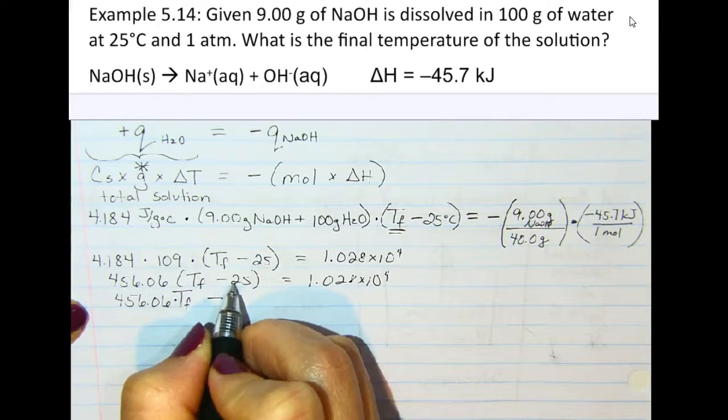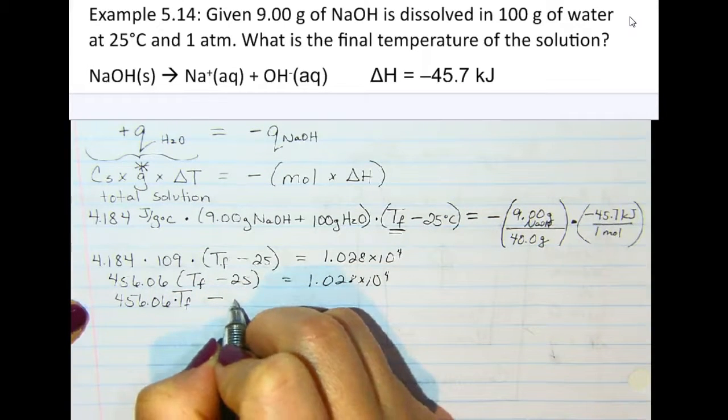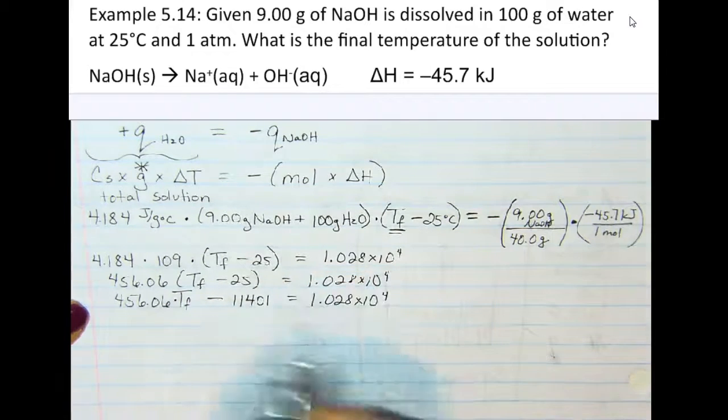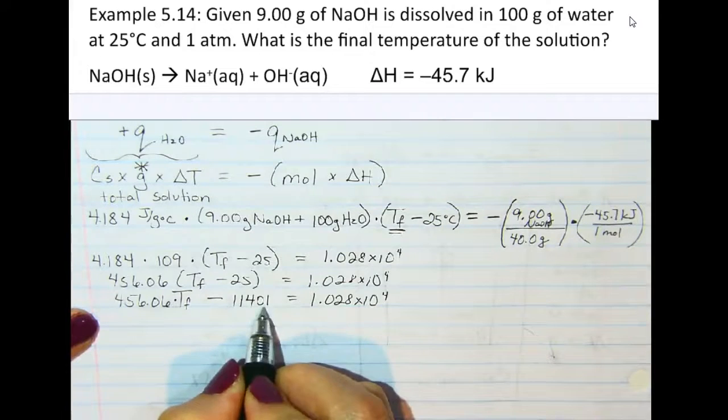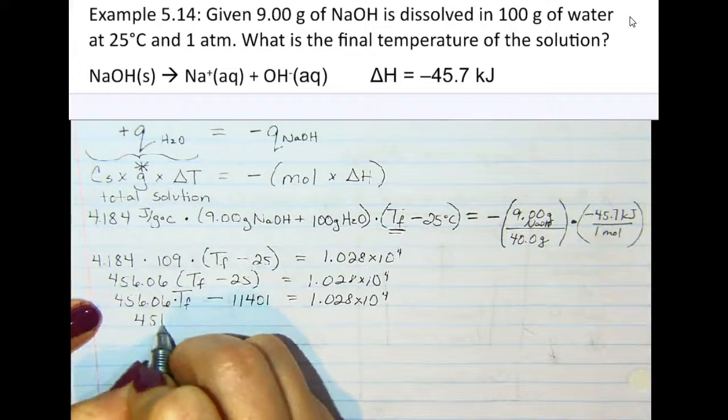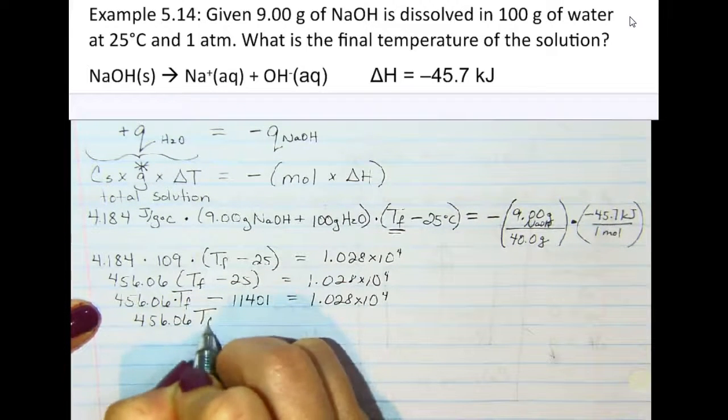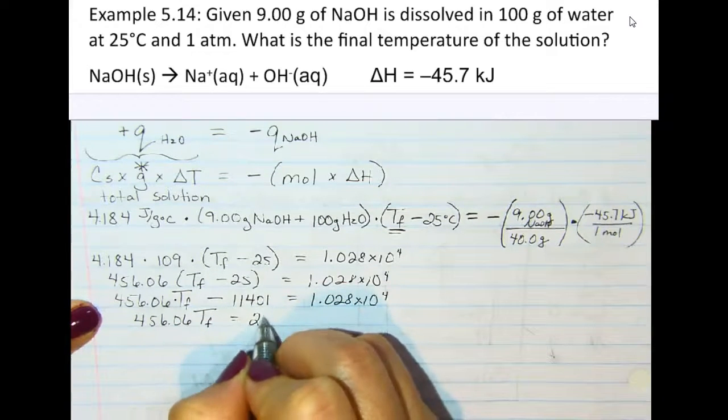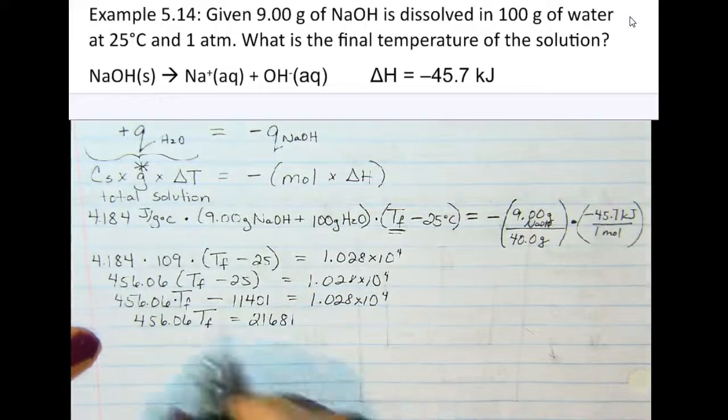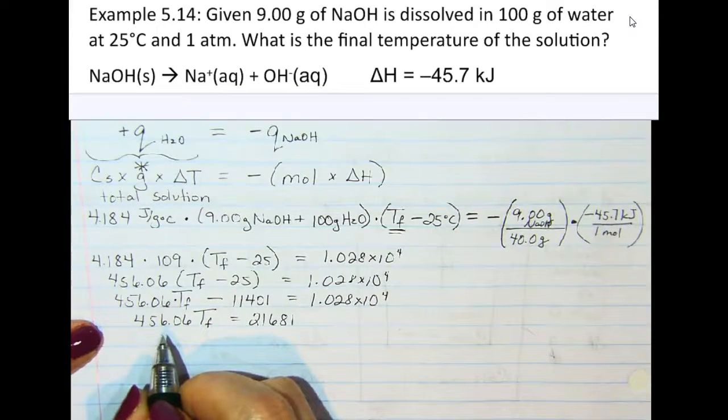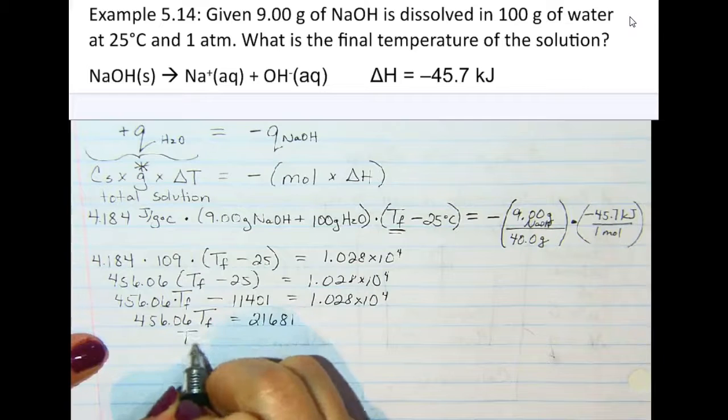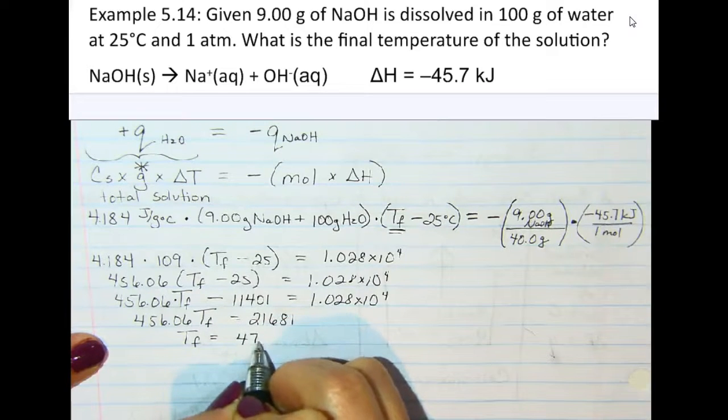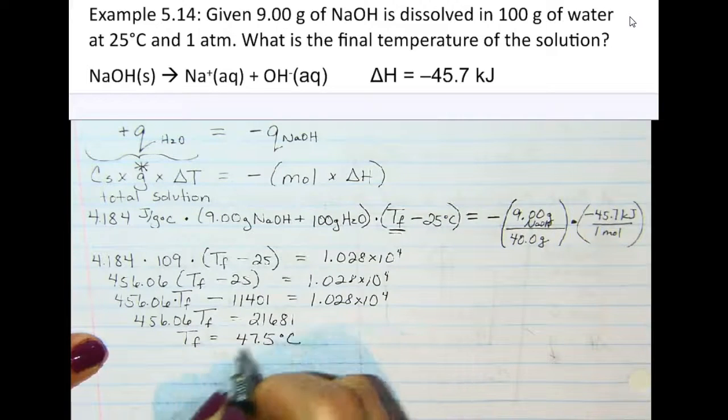And now we need to distribute this value here, and so we get 456.06 Tf minus 11,401. I'm going to add this number to both sides of the equation, so that leaves me with 456.06 Tf equals, when I add these two numbers to each other, I get 21,681, and now I'll divide both sides by 456.06, which gives me a final temperature of 47.5 degrees Celsius.